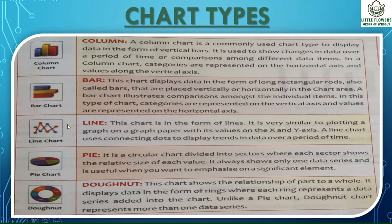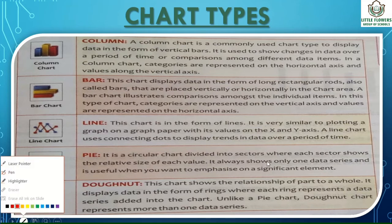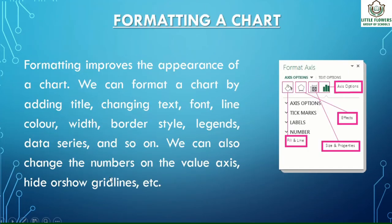Next is the line chart. This chart is in the form of lines, very similar to plotting a graph on graph paper, with values on the x and y axes. A line chart uses connecting dots to display trends in data over a period. Next is the pie chart — a circular chart divided into sectors where each sector shows the relative size of each value. It always shows only one data series.